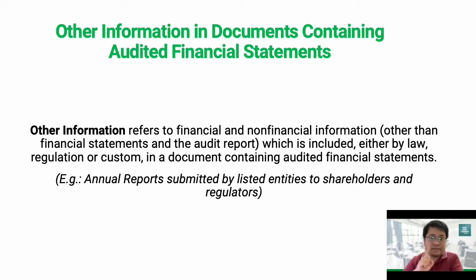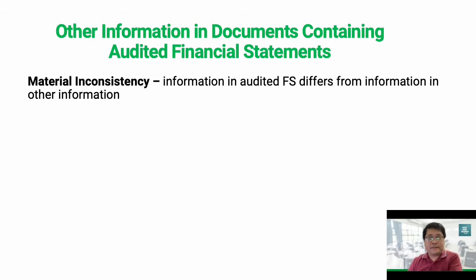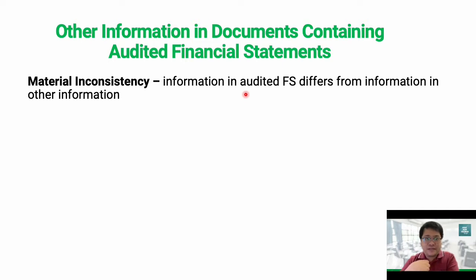So there are two issues here: one is material inconsistency, and another is material misstatement of facts. Let's discuss the first one — material inconsistency — which is when the information in the financial statements is different from information in the other information. For example, if the financial statements show sales of 500 million pesos, but in the president's report or management discussion and analysis it was mentioned that sales were 1 billion, there is a discrepancy. That is an example of material inconsistency.